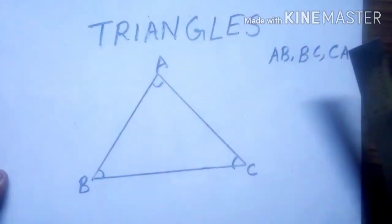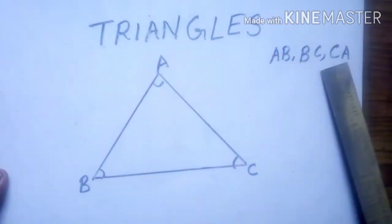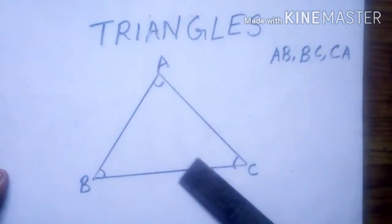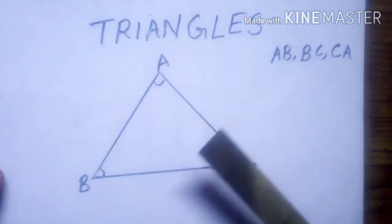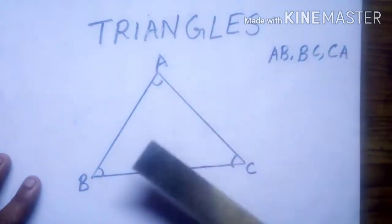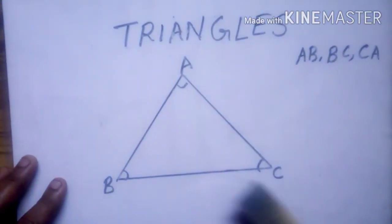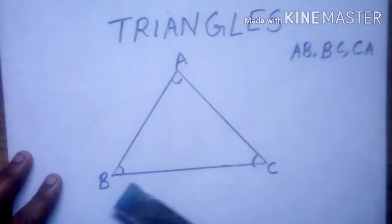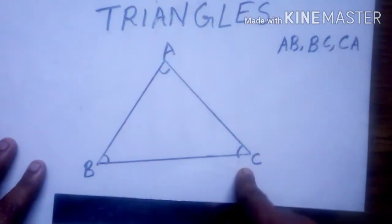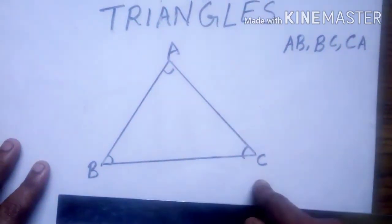A triangle has three sides: A-B, B-C, and C-A. A-B-C is called the base of the triangle. It is also a side, but it is known as the base of the triangle.